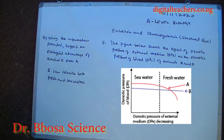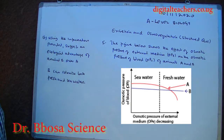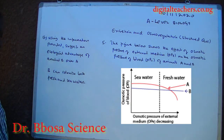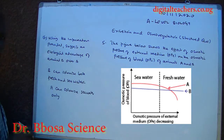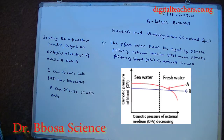Using the information provided, suggest an ecological advantage of animal B over A. Animal B can colonize both fresh water and seawater, while animal A can colonize seawater only.